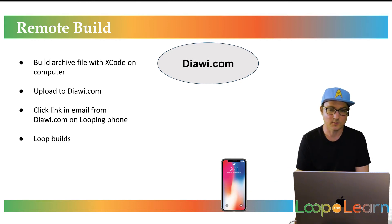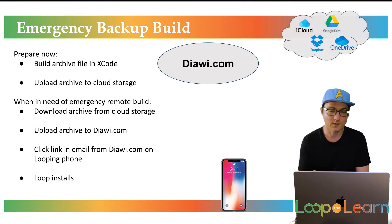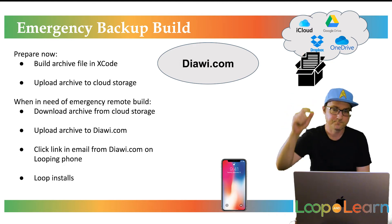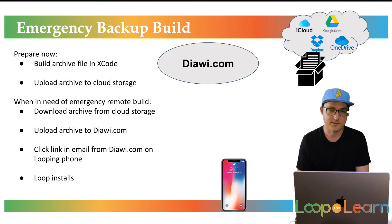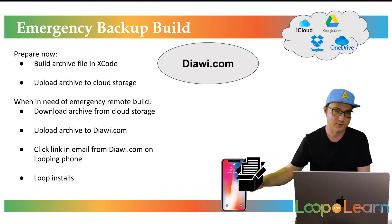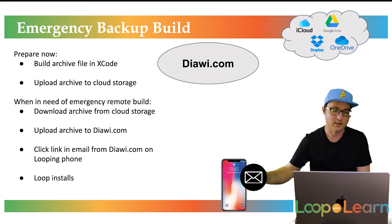The problem with this is that Diawi only stores this file for 24 hours. So in order for this to work for an emergency remote build, you're going to have to take the archive file and upload it to a cloud service such as iCloud, Google Drive, or Dropbox, something like that. Then whenever you need to remote build, take this archive file and download it to your iPhone. From your iPhone, you can upload it directly to Diawi. Diawi will send you the email, you click on the link on your Loop phone and it rebuilds.